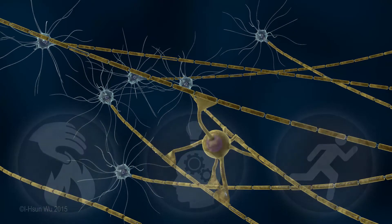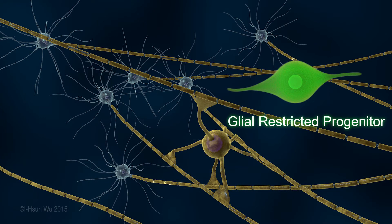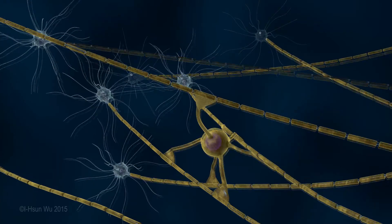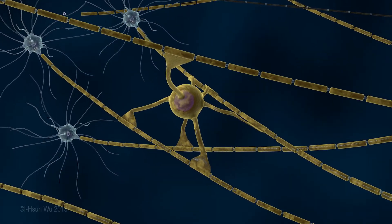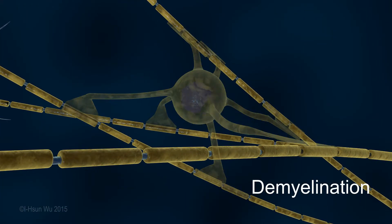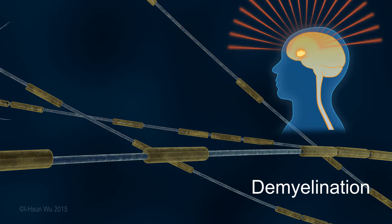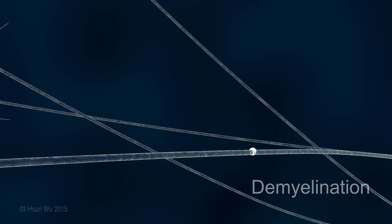Oligodendrocytes are derived from immature cells called glial restricted progenitors. When a myelin sheath is damaged, this is called demyelination. Demyelination has been observed following radiation-induced brain injury. Once the myelin is damaged, it may lead to deterioration of the axon and the neuron itself.